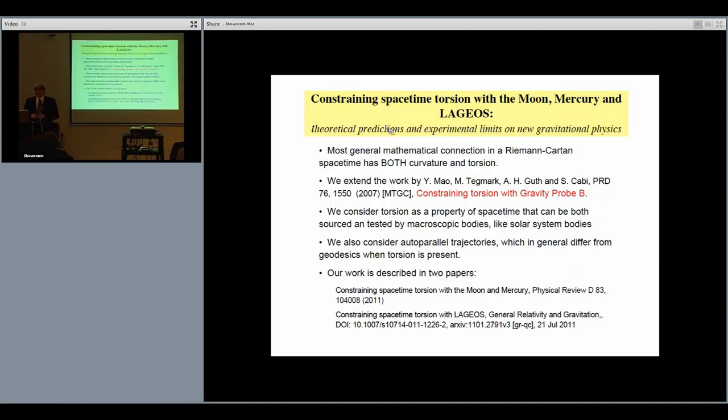We took this approach and extended previous work by these people who used their model to constrain torsion with the Gravity Probe B mission. Here we consider torsion as a property of space-time that can be originated and tested by macroscopic bodies like solar system bodies like the Moon, Mercury, and artificial satellites. We also consider the particular case of auto-parallel trajectories. In general relativity there can be mathematically two types of trajectory: geodesics, which are the usual trajectories along the curvature of space-time, and auto-parallel trajectories—this is the one we are considering for torsion. This work is described in two papers shown here.